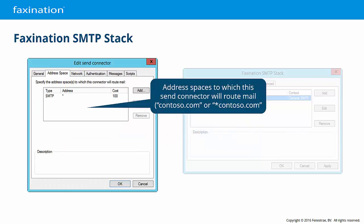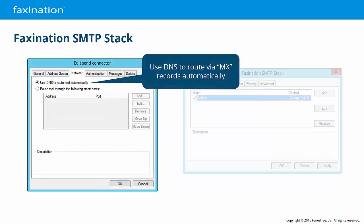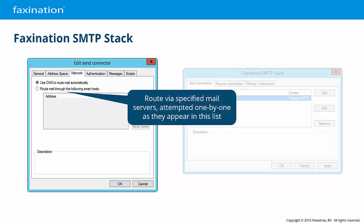The Address Space tab is used to configure relative costs for multiple domains. When a destination address matches multiple address spaces, the domain configured with the lowest cost will be used. The Network tab is used to configure whether the SMTP server should deliver inbound messages by using DNS queries to determine the IP address of the responsible server, or if it should rely on a Smart Host or Relay to deliver the message instead. Multiple Relay servers may be configured for redundancy and will be tried in order from top to bottom; you may also move servers up and down the list to adjust their priority.